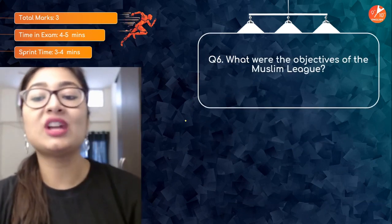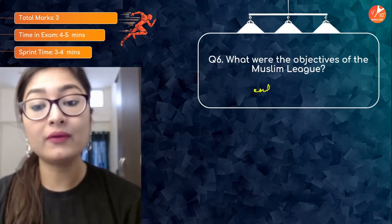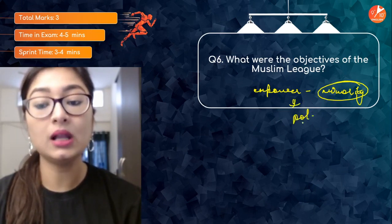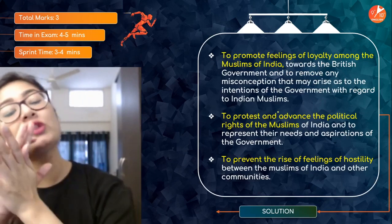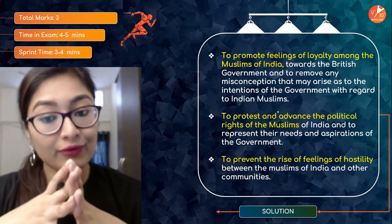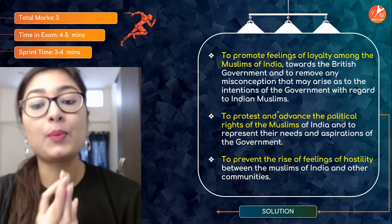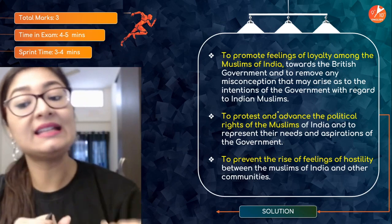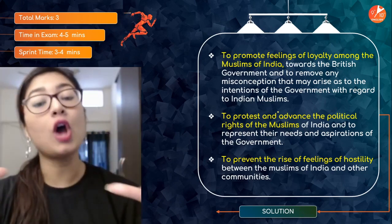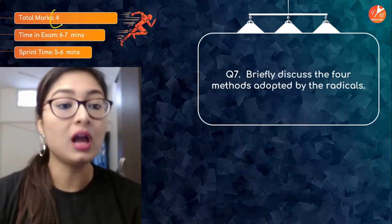Three-marker question: what were the objectives of the Muslim League? The objectives were: to promote feelings of loyalty among Muslims of India towards the British government and remove any misconceptions about the government's intentions regarding Indian Muslims; to protect and advance the political rights of Muslims and represent their needs to the government; and to prevent the rise of hostility between Muslims and other communities in India.